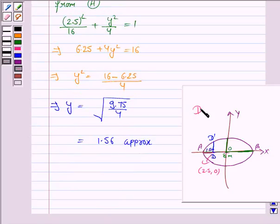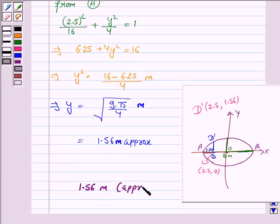So here the coordinates of the point D dash are 2.5, 1.56. That is, the y coordinate is 1.56, which is the height. Hence the height is 1.56 meter approximately. And this completes the question. Bye for now, take care, have a good day.